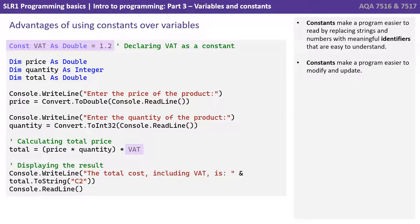Constants make a program easier to read by replacing strings and numbers with meaningful identifiers that are easy to understand. Constants make a program easier to modify and update.